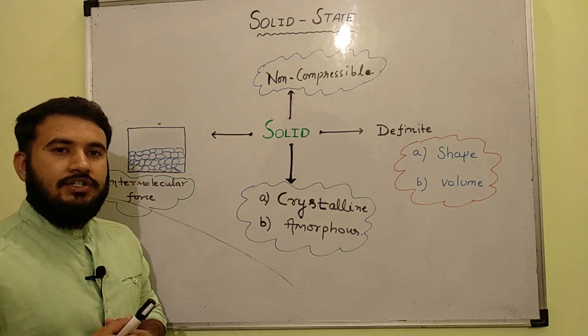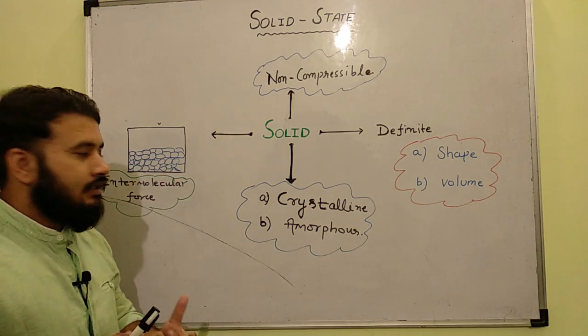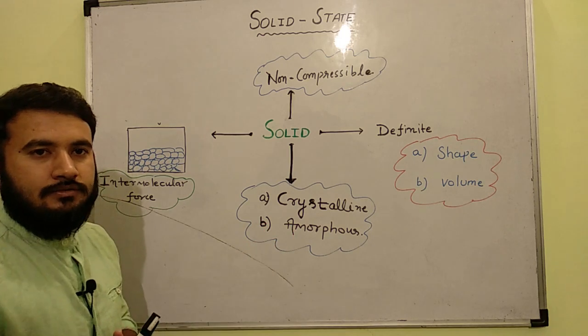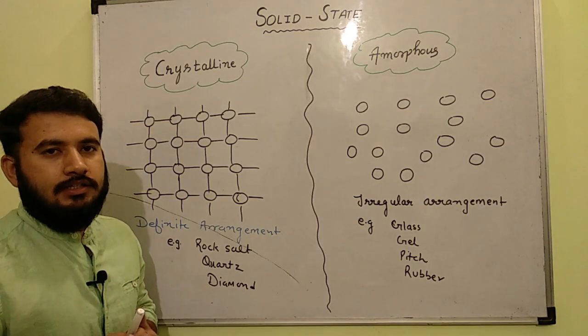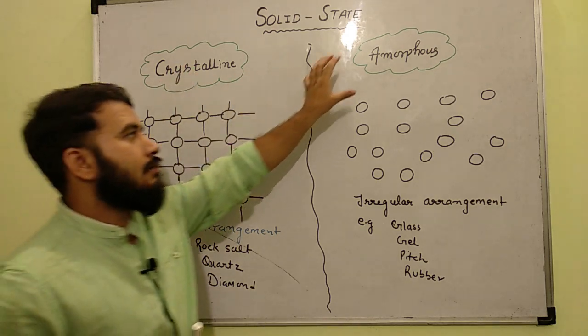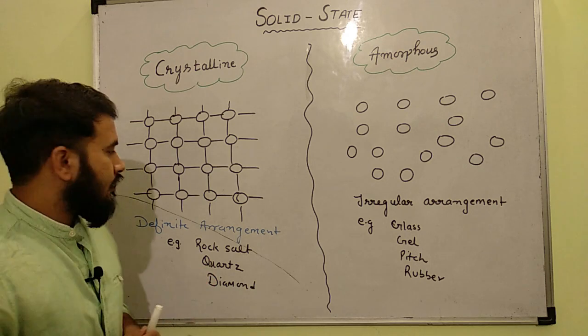Now let's talk about classification. So mainly solids can be classified into two categories, i.e. the crystalline solid and the second one is amorphous solid. So as solid can be classified into two categories, the first one is crystalline and the second one is amorphous. So what are crystalline solids?